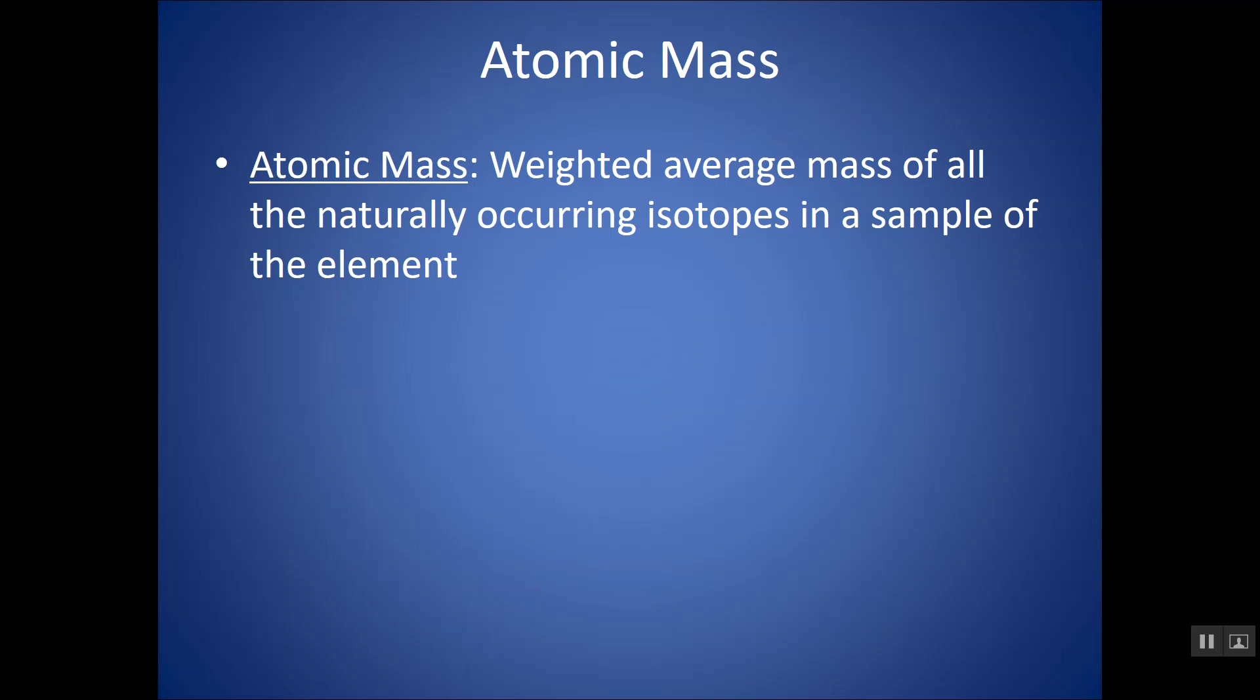Atomic mass is a weighted average mass of all the naturally occurring isotopes in a sample of the element. So let's say something like carbon. Carbon can be found as carbon 12, carbon 13, and carbon 14, those numbers being the mass numbers. And some of them are more abundant in nature than others. The atomic mass will be closest to the mass number of the most abundant of those isotopes. And that's why we say it's weighted.